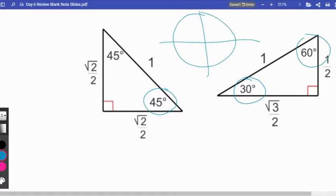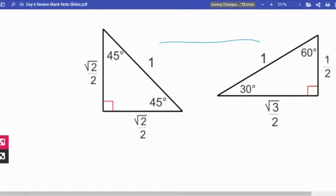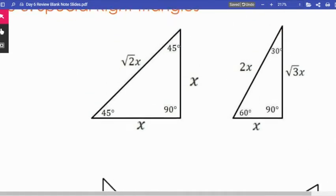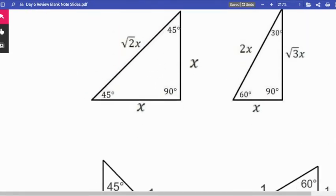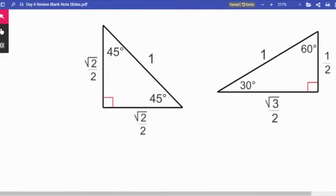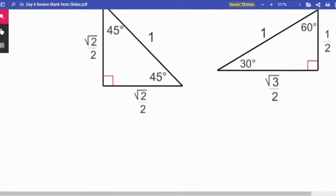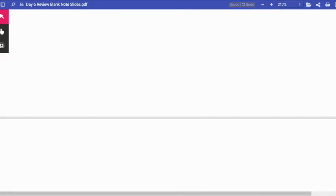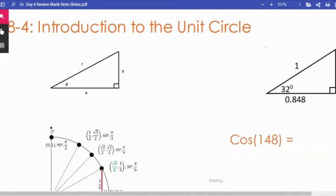The special right triangles are the building blocks of the unit circle that we created in eight four. As far as the quiz goes, just know that these triangles are what give us the unit circle. It's not bad to have these sides memorized. I'm not going to promise you're going to have to do anything too crazy with this on the quiz.